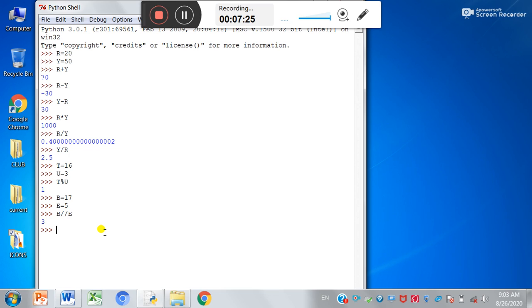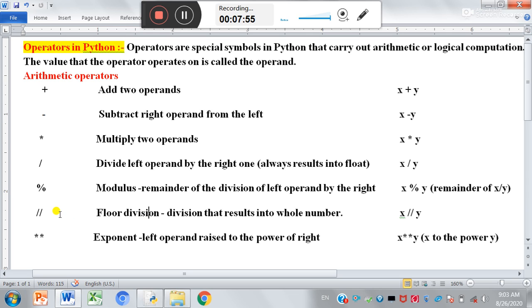So what does this floor division do? It has removed the decimal places from the result. So what is the function of floor division? It will return the result after division into whole number or without decimal places.